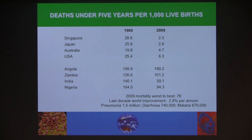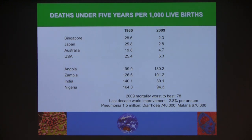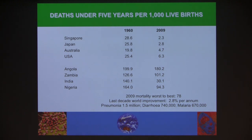A widely used measure of overall health system efficacy is deaths under five years per thousand live births. Look at the tremendous improvement in industrialised countries over the last 50 years — deaths under five are now quite uncommon. India has done comparatively well but still has 30 deaths per thousand live births. Comparing the worst to the best, there is a 78-fold difference — a 78 times bigger chance of a beautiful little baby dying in the first five years than if you lived in Australia, Japan, or the USA.